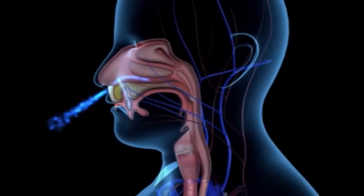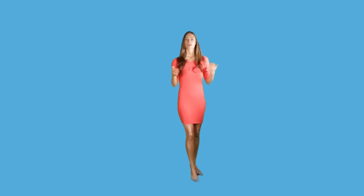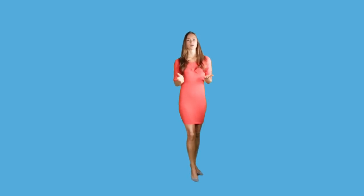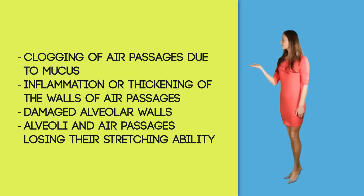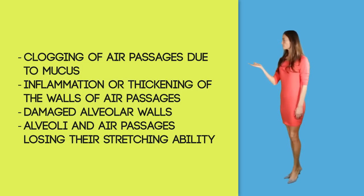In the case of COPD, some changes in the respiratory tract cause the volume of inhaled and exhaled air to be reduced. These changes can be one or more of the following: clogging of air passages due to mucus, inflammation or thickening of the walls of air passages, damaged alveolar walls, and alveoli in air passages losing the ability to stretch.